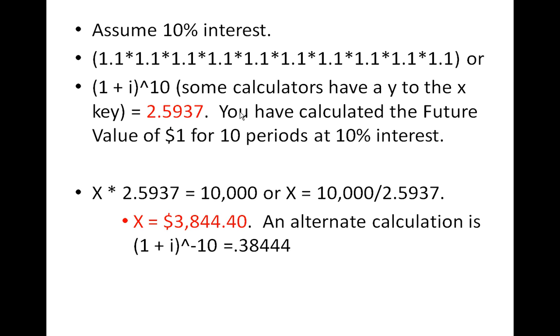What we want to know is what is the present value. How much money would I need to put in the bank today in order for it to be worth $10,000 10 years from now? Well, I know if the present value today is X, if I multiply that times the future value, 2.5937 that we calculated here, that'll give us $10,000. So I do a little bit of algebra, and I calculate that the present value of the $10,000 discounted for 10 periods at 10% is $3,844.40. And I've given you an alternate calculation here, raising it to a negative 10.